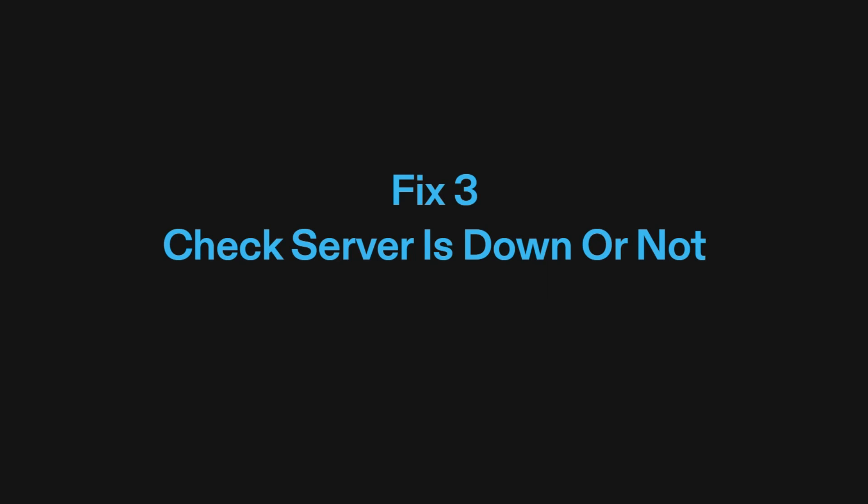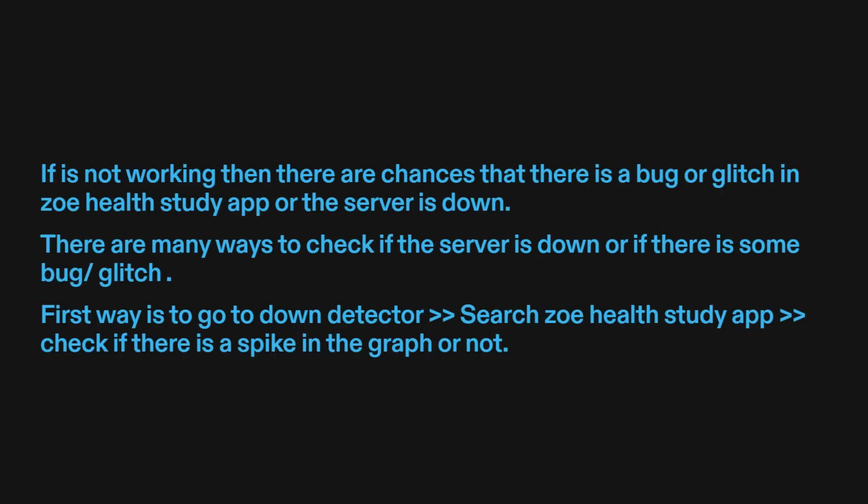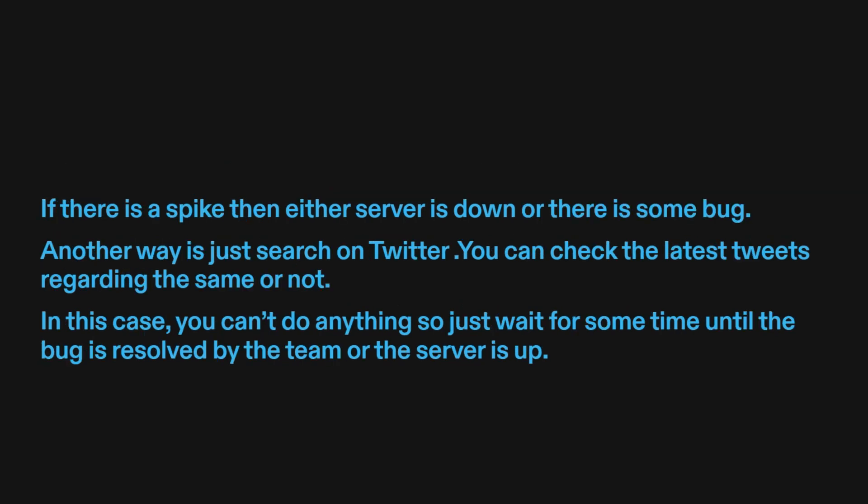Fix three: check if the server is down or not. If it's not working, there are chances that there is a bug or glitch in the Zoe Health Study app, or the server is down. There are many ways to check this. First, go to Down Detector and search for Zoe Health Study app. Check if there is a spike in the graph — if there is, then either the server is down or there is some bug. Another way is to search on Twitter and check the latest tweets regarding the issue. In this case, you can't do anything, so just wait until the bug is resolved by the team or the server is back up.